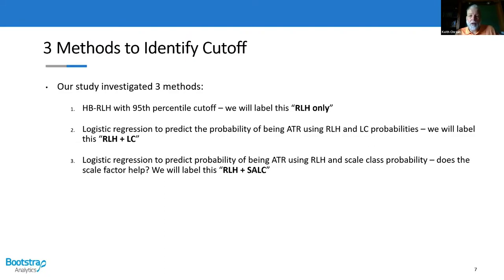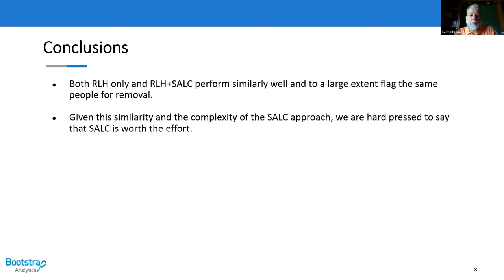They looked at three methods: RLH only, RLH combined with latent class analysis, and RLH combined with scale-adjusted latent class. They found that RLH only and RLH plus scale-adjusted latent class perform similarly well and better than RLH plus regular latent class. The two top methods largely identified the same respondents as random. Given similar performance, the added complexity of scale-adjusted latent class didn't seem worth the effort, so they concluded — as earlier papers had — that the RLH method is the way to go if you want to remove random responders.